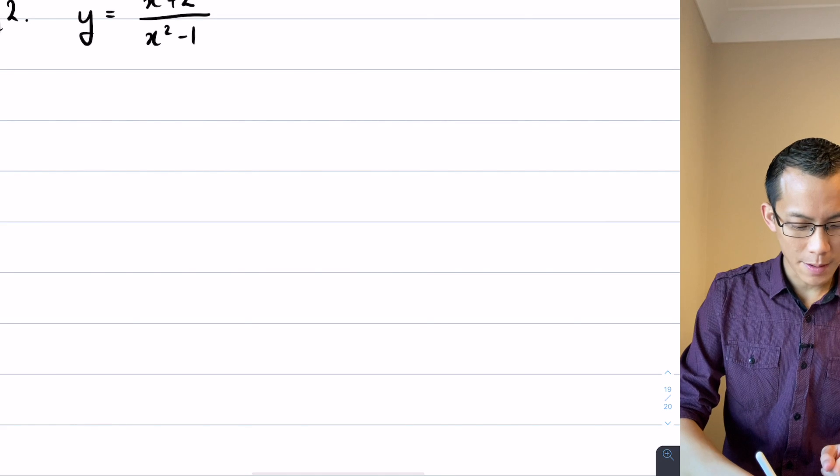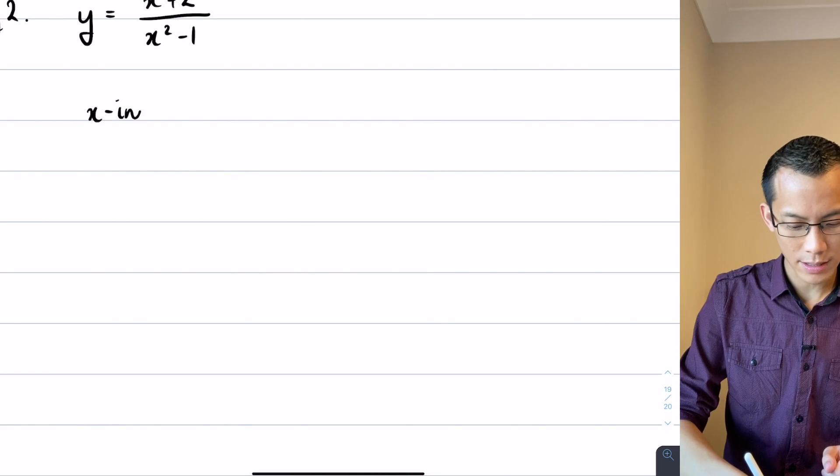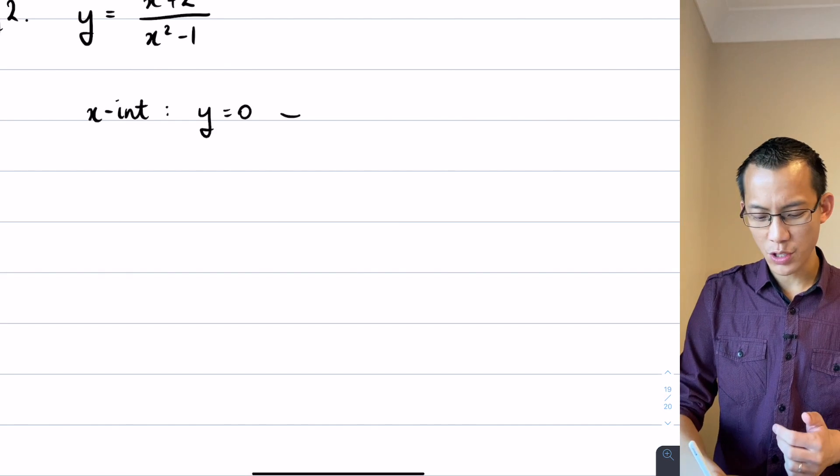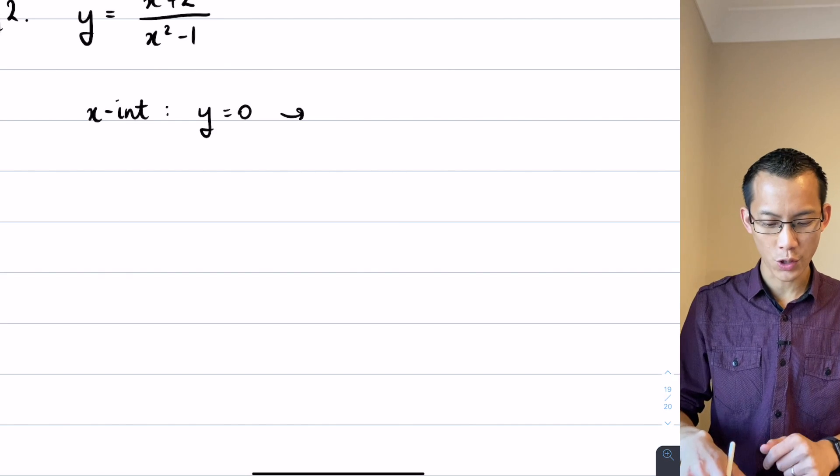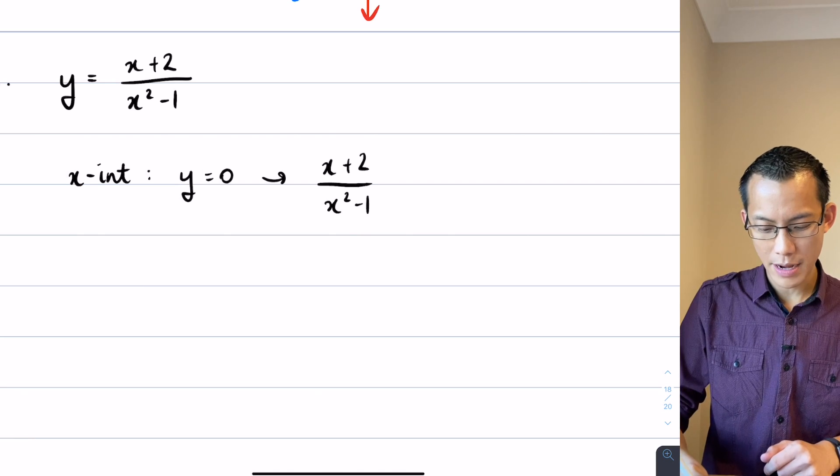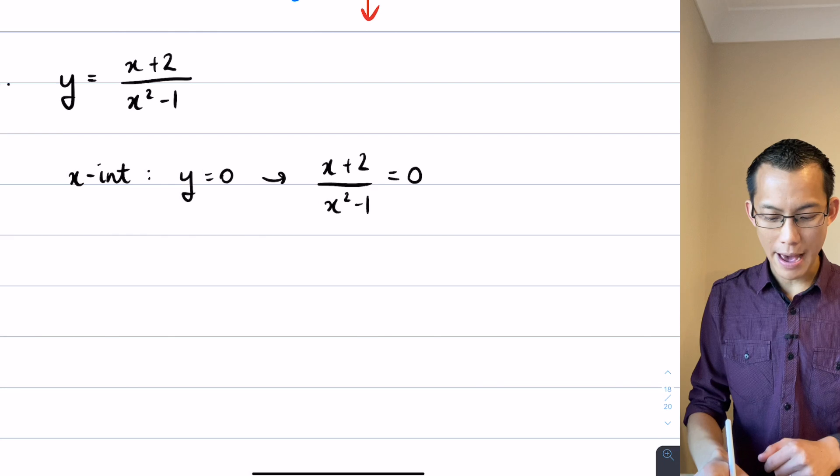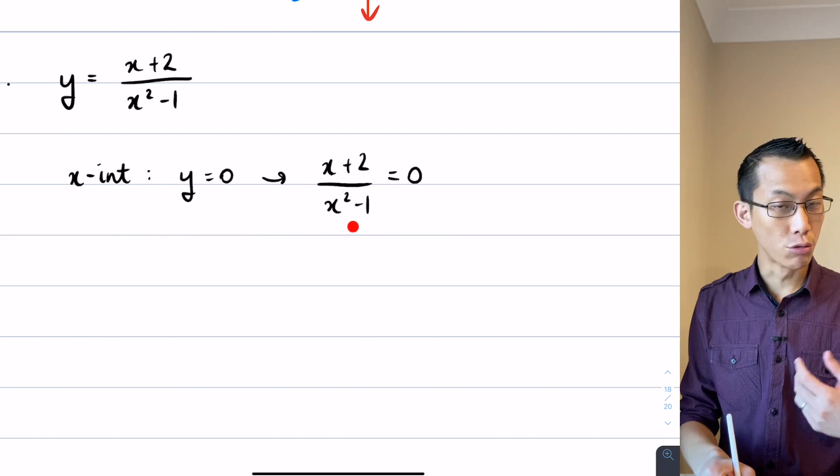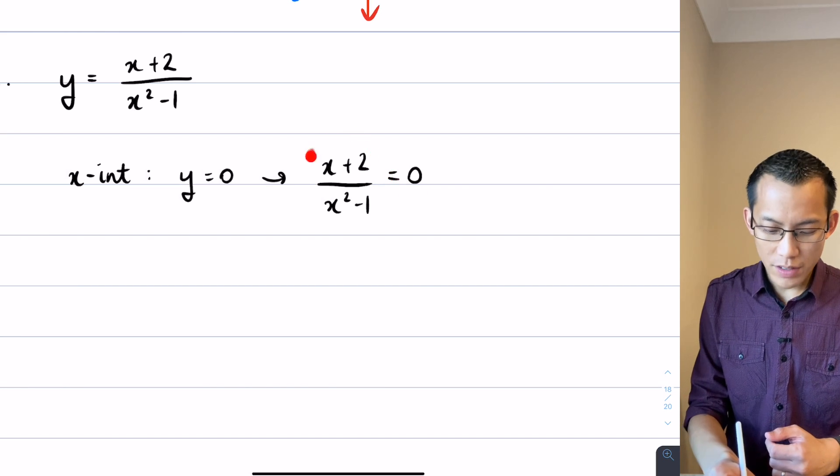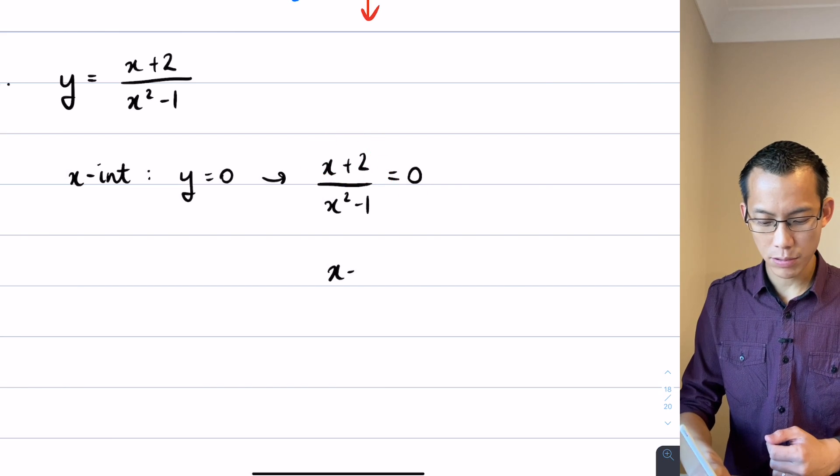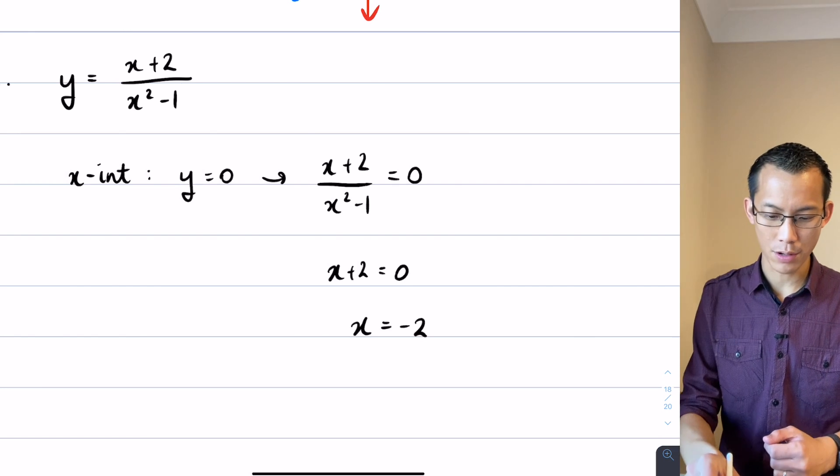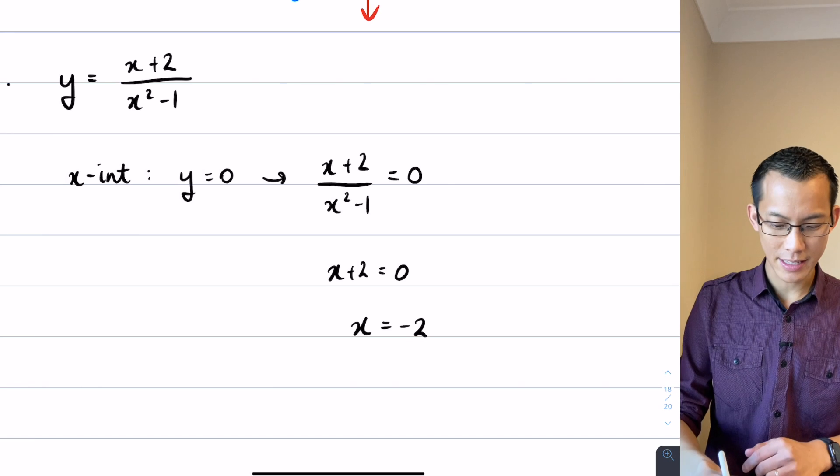Let's begin with those intercepts and start with the x-intercept. So we let y equal 0, and if I just do a straight substitution, this highlights what we were talking about before: if you have x plus 2 on x squared minus 1 equals 0, it doesn't matter what value of x you put into the denominator, you'll never get something on the right-hand side which is 0. What you want is for this numerator to equal 0. You want x plus 2 to equal 0, so x must be negative 2. So this is our x-intercept.